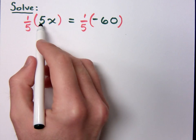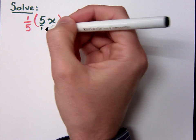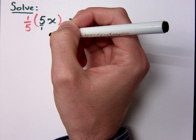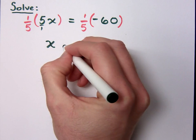If you multiply a number, in this case 5 over 1, times its reciprocal, what do you get? You get just 1, right? So this is just x.